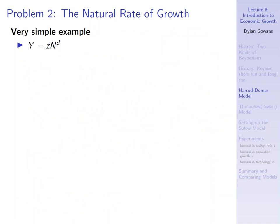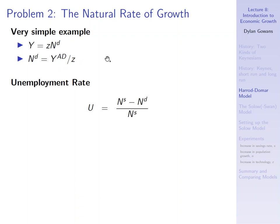Nothing in the Harrod model guarantees that the economy will grow at this natural rate — there's nothing that says aggregate demand needs to be growing at the rate of labor supply and technology. Here's a simple example to explain why. Imagine that output is produced by this simple production function: output is just Z times the amount of labor employed. In the Keynesian model, the amount of labor is determined by aggregate demand — aggregate demand is determined first, and then you pick the number of workers you need to hit that amount of output. So we rearrange this equation for labor demand. The unemployment rate is labor supply minus labor demand divided by labor supply, or the total labor force.